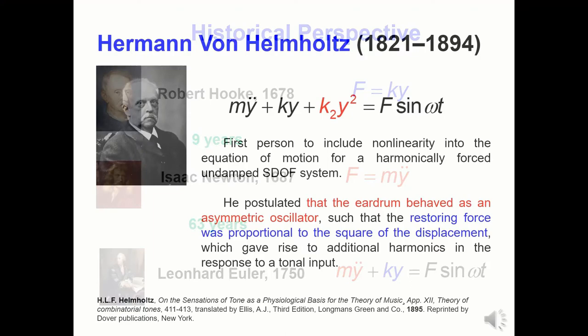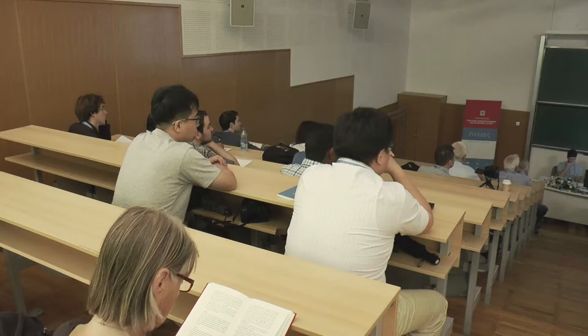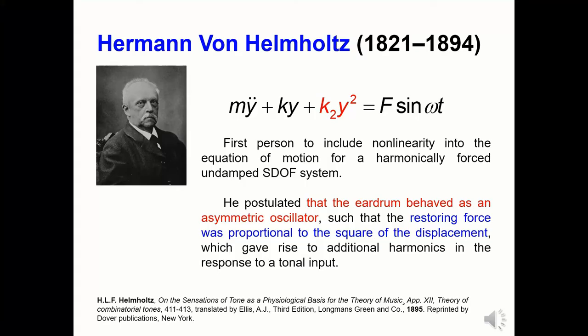We now move on about 100 years or so until Hermann von Helmholtz introduced a nonlinear stiffness. He was studying the human ear and thought that the eardrum behaved as an asymmetric oscillator, such that the restoring force was proportional to the square of the displacement, giving rise to additional harmonics in response to a tonal input. It turns out that this was not correct, but he was correct in introducing the quadratic nonlinearity k2y squared to describe an asymmetric stiffness.